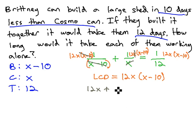we see the x's dividing out, 12 times x minus 10, equals the 12's divide out, x times x minus 10.